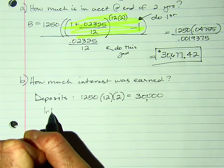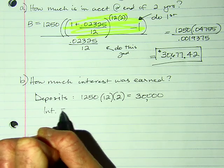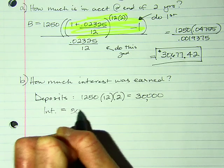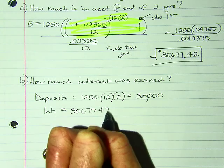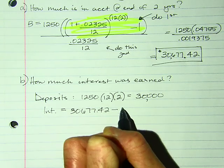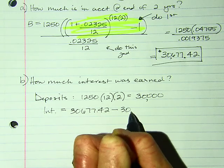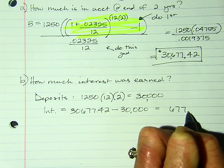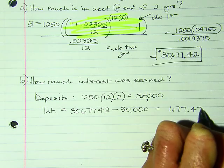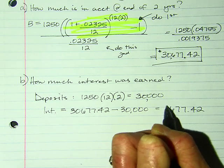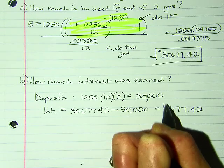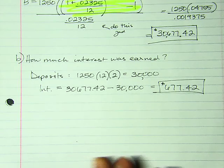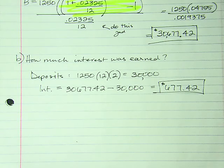Her interest equals her total of $30,677 minus her deposits of $30,000, which equals $677.42. That's not a ton of money, but it's free money, and that was only in two years.